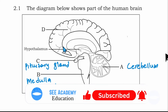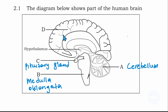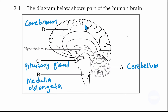Number D is the largest part of the brain. It's called the cerebrum. So number D is the cerebrum. These are the labels needed in this diagram, so let's get to the questions.